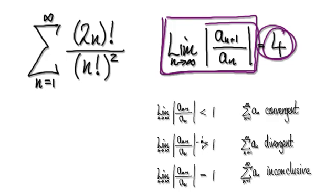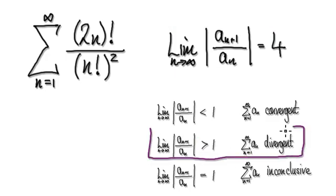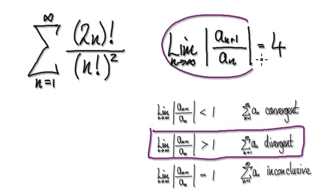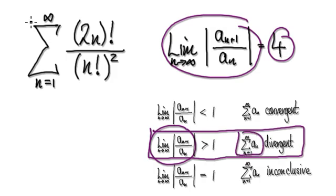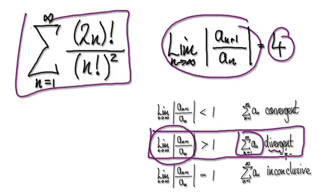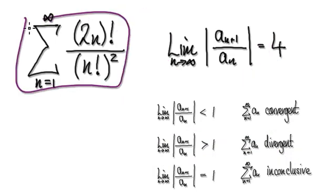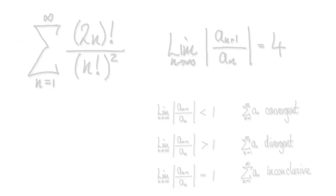So 4 is greater than 1, so we should be looking at this. Because this value here is greater than 1, we know that our original series will diverge. So as it turns out, our original series will diverge.